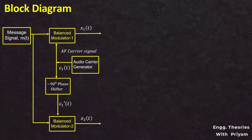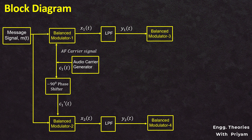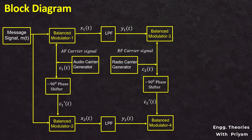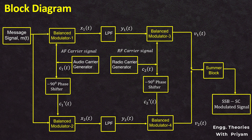Both of the generated signals are given as input to the low pass filter. This low pass filter having the cutoff frequency FM minus F0 only allows the low frequency term to pass through, eliminates the high frequency term, and the output signals from this low pass filter are termed Y1(T) and Y2(T). Now, the two signals from the low pass filter are given as input to balanced modulator 3 and 4, and the radio frequency carrier signal C2(T) and the 90-degree phase shifted radio frequency carrier signal C2'(T) are given as inputs to balanced modulator 3 and 4 respectively. Balanced modulator 3 and 4 generate signals V1(T) and V2(T). The addition of the two outputs from balanced modulator 3 and 4 gives the upper sideband SSBSC modulated signal, and the subtraction gives the lower sideband SSBSC modulated signal.